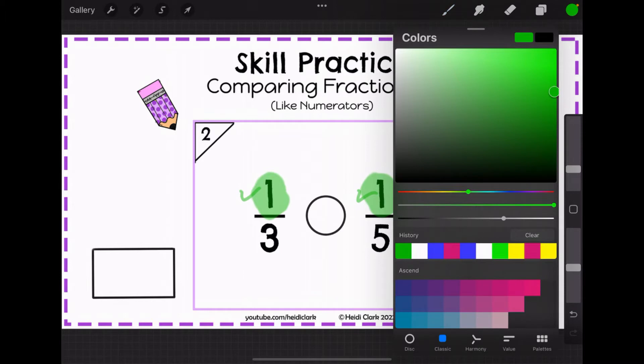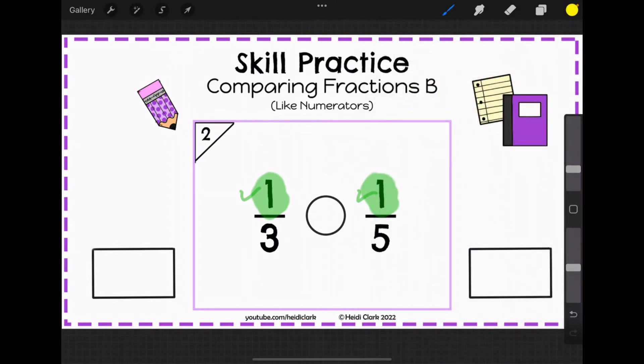The denominator tells us how big those pieces are going to be because this is how many it's split into. On the left we need to take this rectangle and split it into thirds. On the right we need to take this rectangle and split it into fifths.